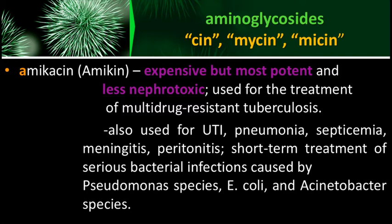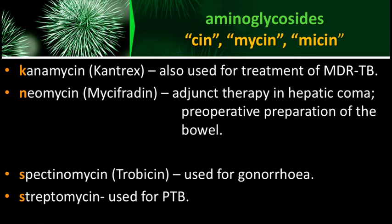Amikacin is also used for UTI, pneumonia, septicemia (infection in the blood), meningitis, and peritonitis. It is used for short-term treatment of serious bacterial infections caused by Pseudomonas aeruginosa, E. coli, and Acinetobacter species. It can be given intramuscularly or via IV for serious gram-negative infections. Kanamycin, brand name Kantrex, is also used for MDR-TB treatment.